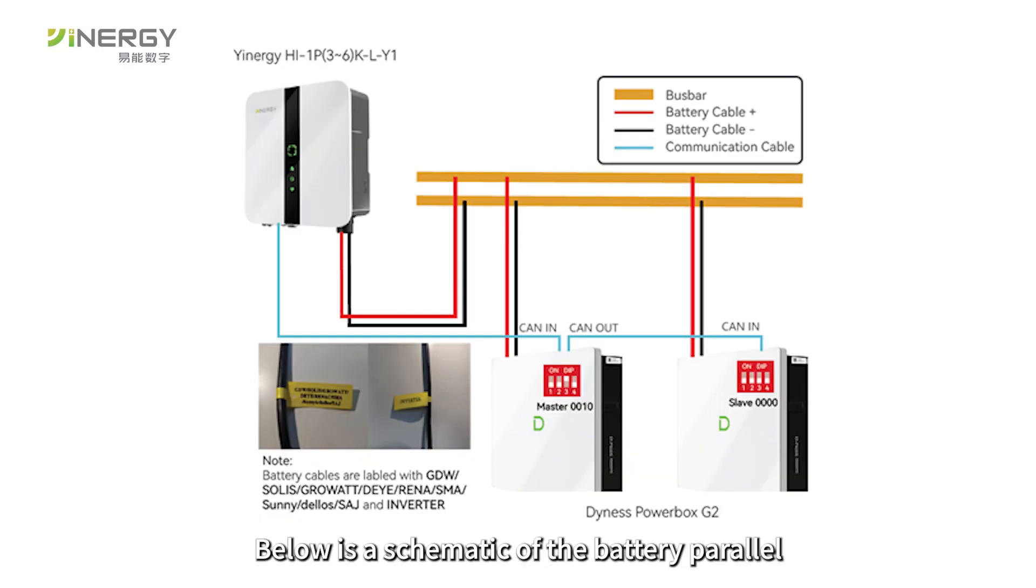Battery parallel connection: Below is a schematic of the battery parallel connection and communication steps. Before operation, ensure the battery system is powered off and the inverter DC switch is turned off.